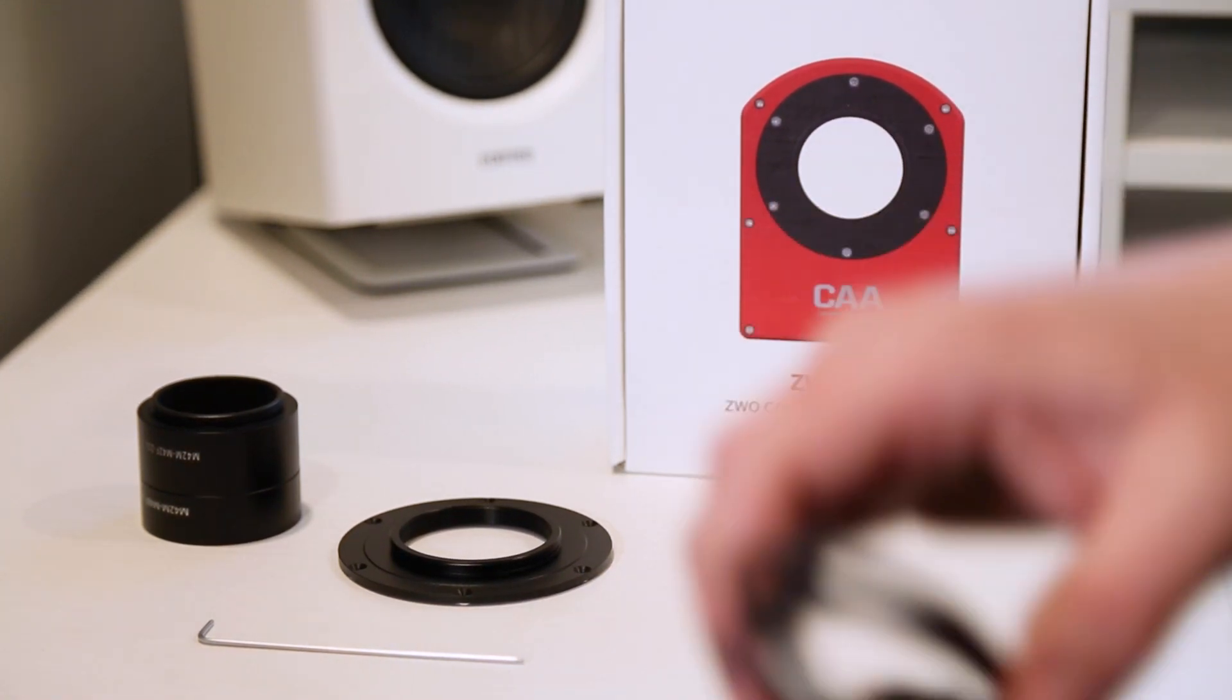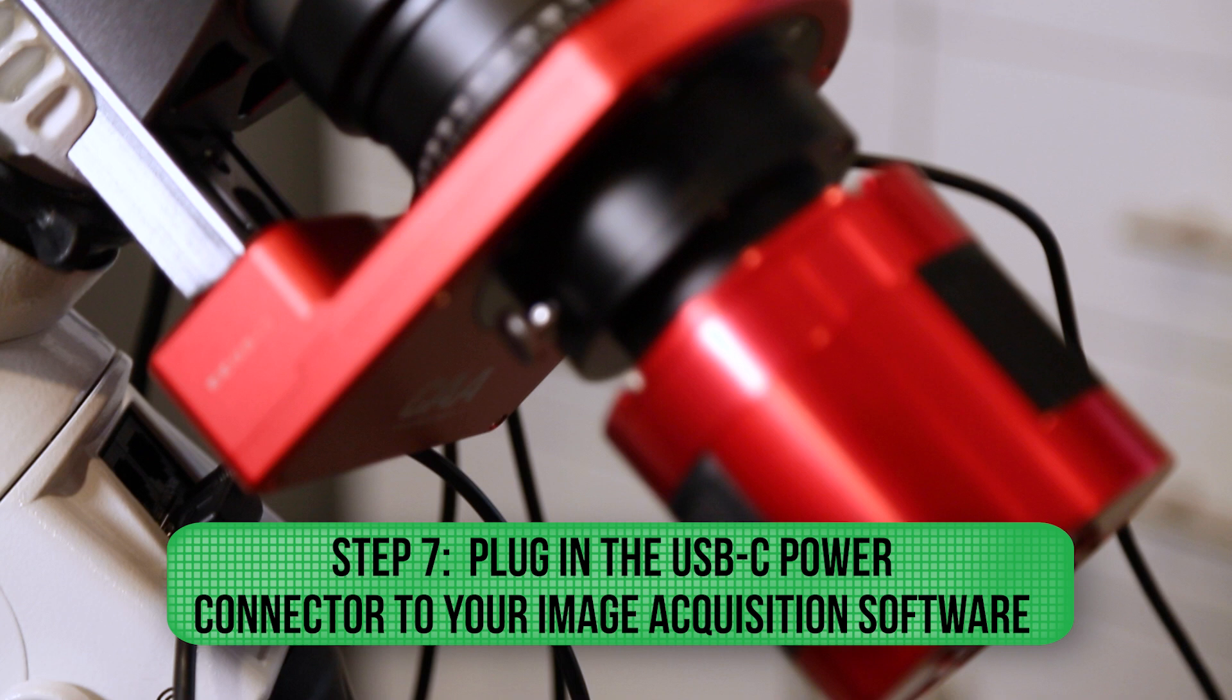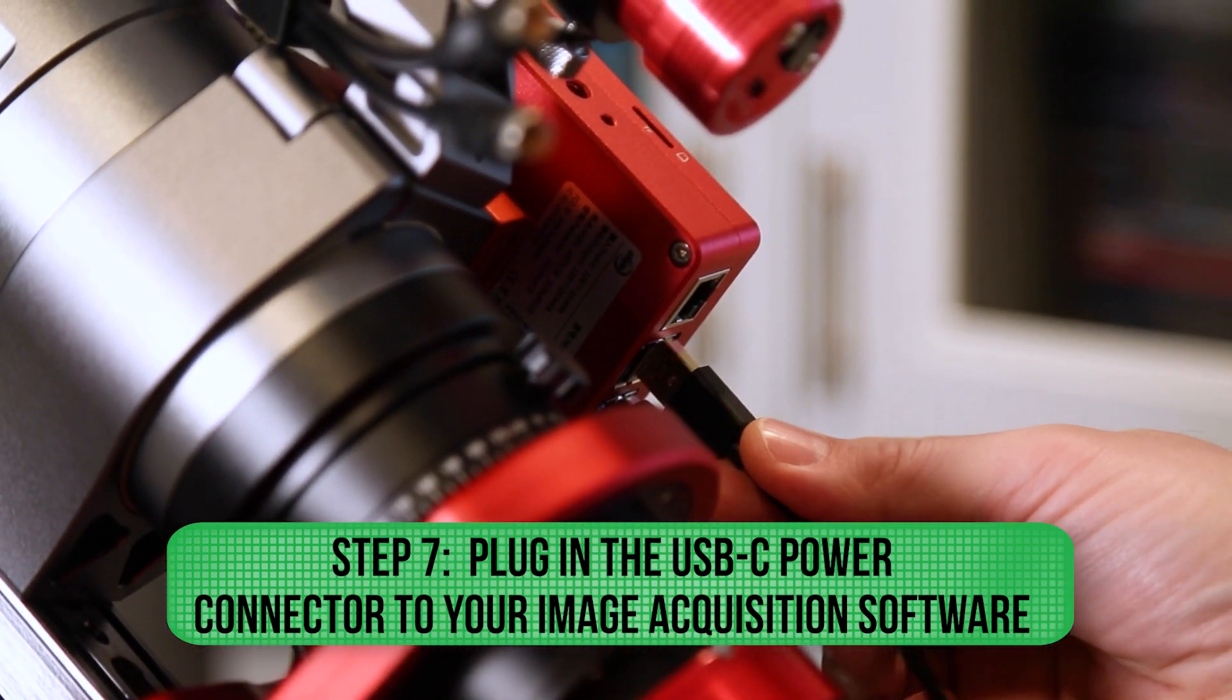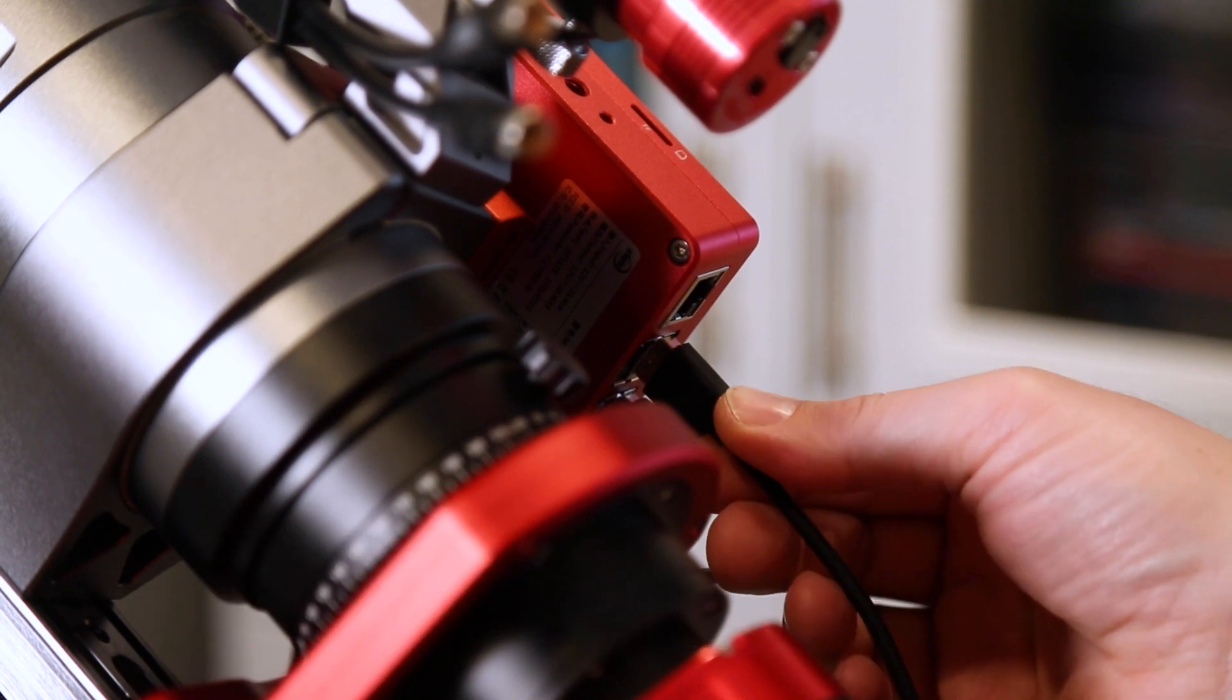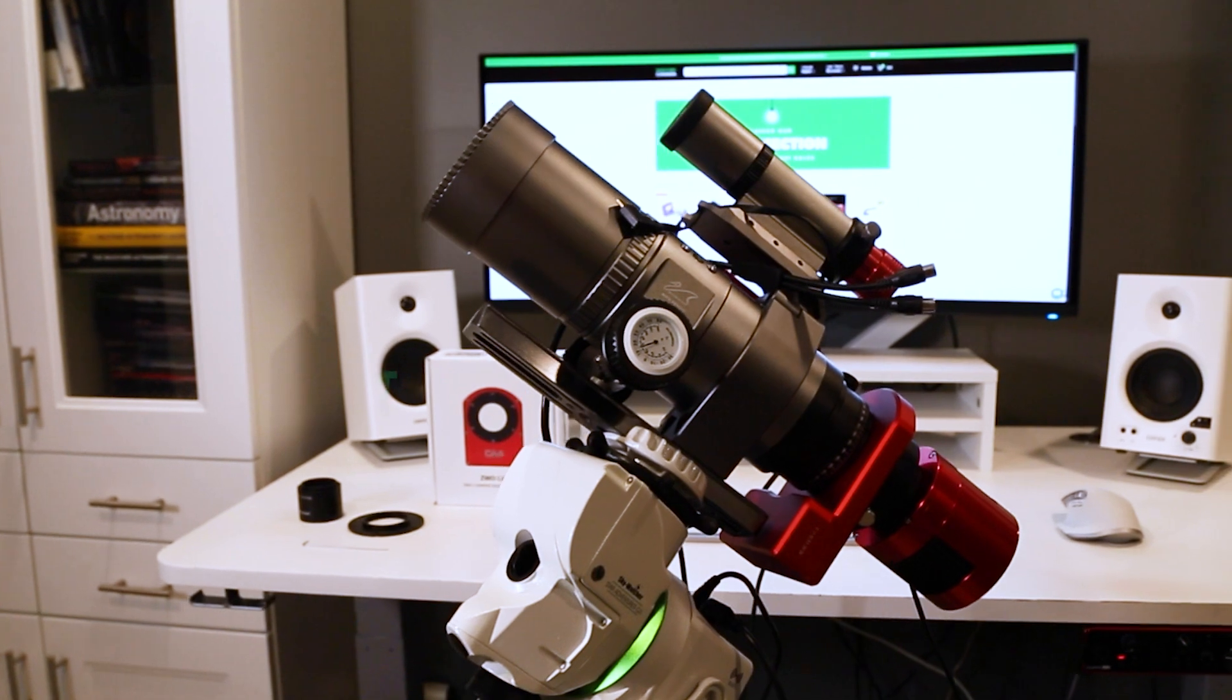So once that's all set, all we need to do is plug in the USB-C cable to whatever image acquisition software you're using. It could be the ASI Air, like in this case, or a PC running NINA or even a hub. Once you've got that connected, you're all ready to go.